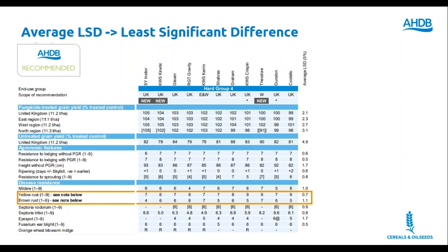The reason for that is that we express the yield of a variety against a group of carefully selected control varieties. In this case, you can see that Skyfall and Siskin in this screenshot have been circled. They are part of the control group. The other two are KWS Barrel and Elation. The reason we do that is because yield itself varies considerably due to weather and disease severity. By expressing it as a percentage, we can keep it a bit more stable. Otherwise, it would fluctuate too much from year to year.